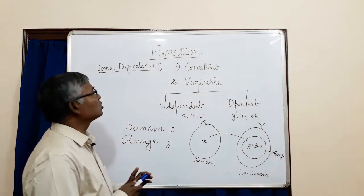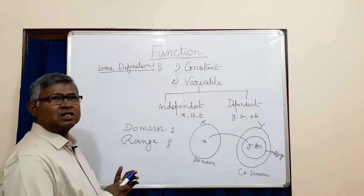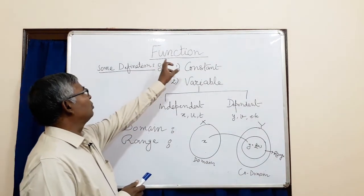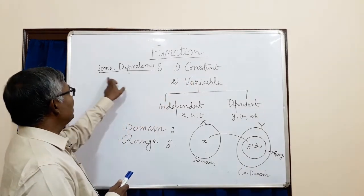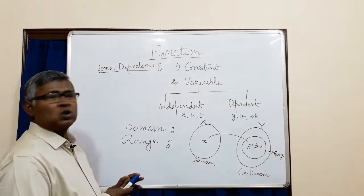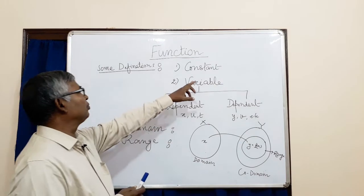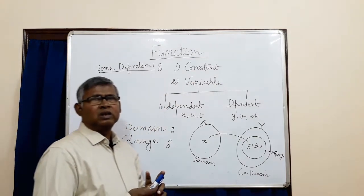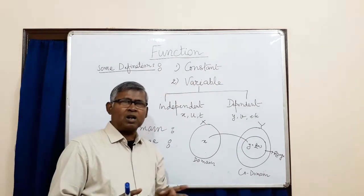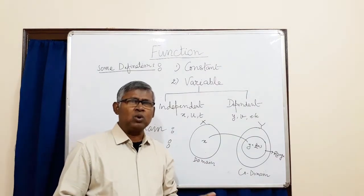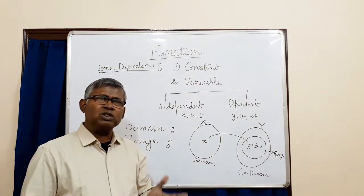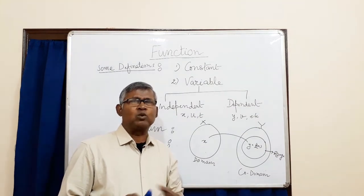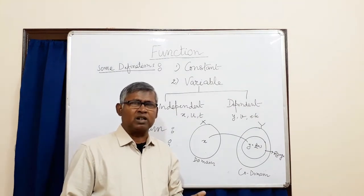Now let us introduce some definitions relating to the chapter on functions. The definitions are as follows: constant and variable. What is constant? The number which remains the same in any manipulation or any calculation is called a constant.